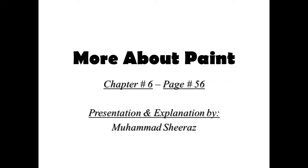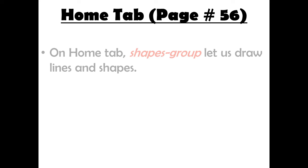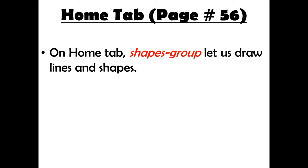The chapter name is 'More About Paint', chapter number six, page number 56. On the Home tab, in the Shapes group, we can draw lines and shapes. The name of that group is Shapes, which enables us to draw lines and different shapes.